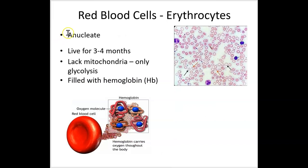All red blood cells are anucleate — 'a' in front of the word means without. You'll see the little white space inside where the nucleus used to be. They don't have a nucleus, so they don't have DNA inside them. They only live for three to four months because they can't replicate. They don't really have any organelles — the mitochondria are ejected early and the nucleus pops out before release. So they're basically just a bag of hemoglobin.